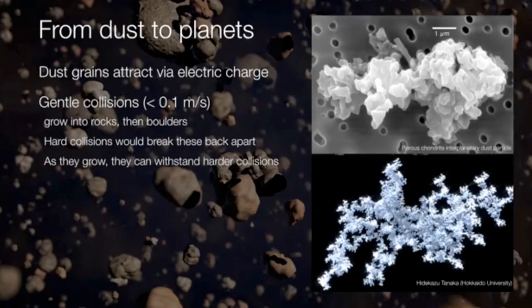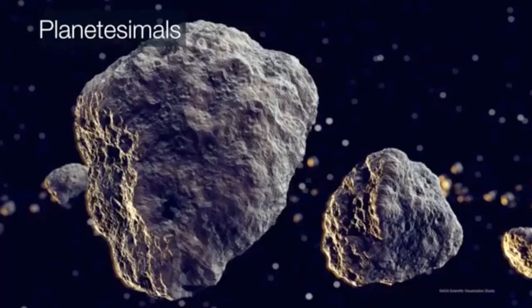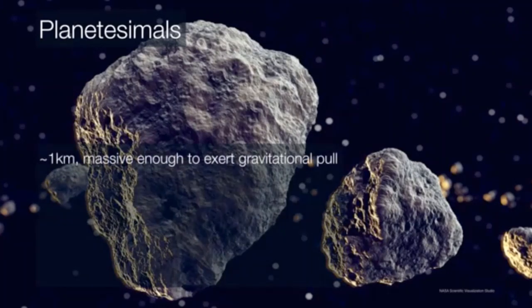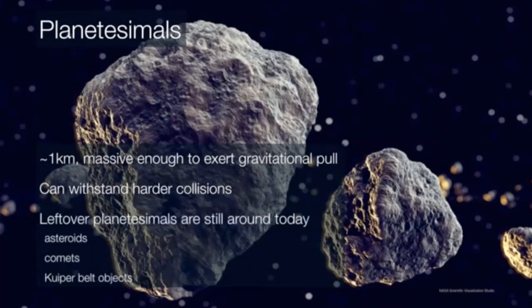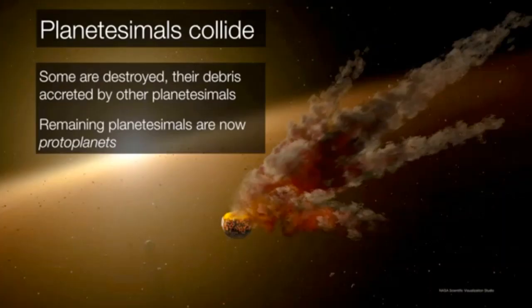As these things grow, they can withstand harder and stronger collisions until they grow into planetesimals, about one kilometer in size. At this point they are massive enough to exert a gravitational pull on one another. This means that they can withstand higher velocity collisions. In fact, we see leftover planetesimals around the solar system today as asteroids, comets, and Kuiper belt objects. These planetesimals collide in a kind of proto-solar system demolition derby.